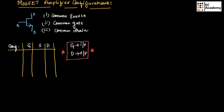In common source configuration, source is connected to ground, which means source is common between input and output. As mentioned, gate terminal is preferred as input terminal and drain terminal will be the output terminal. So in this configuration, gate terminal will be the input side and drain terminal will be the output side.